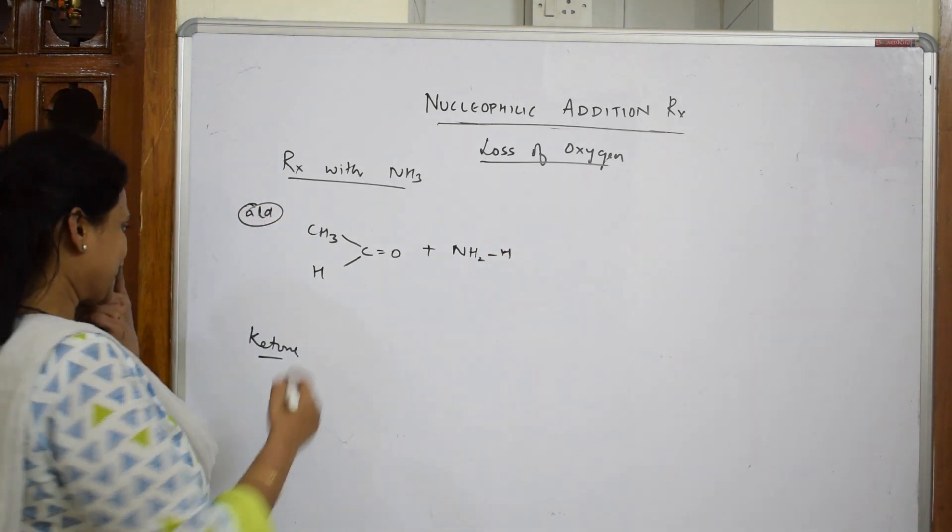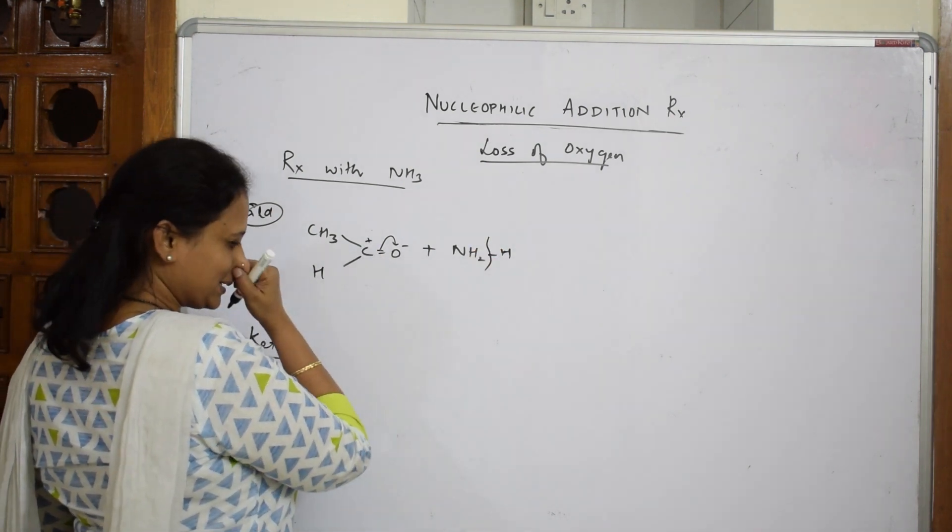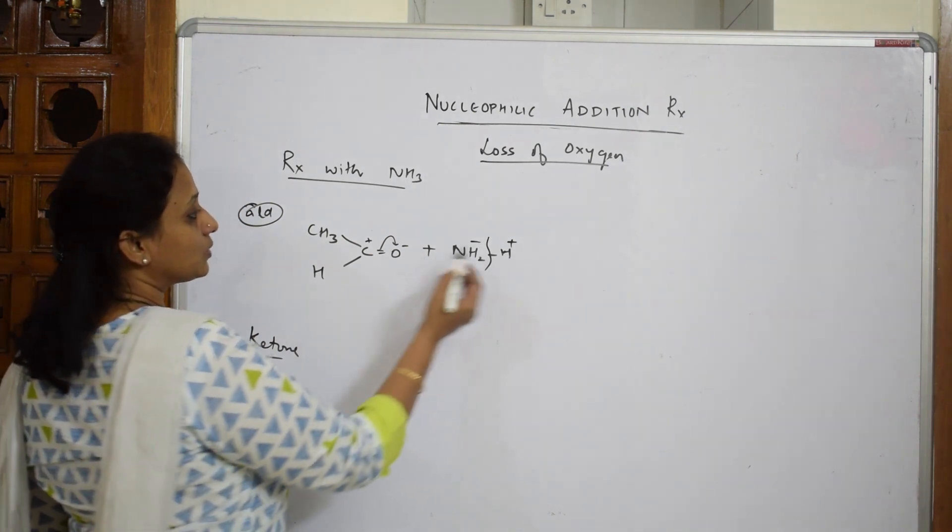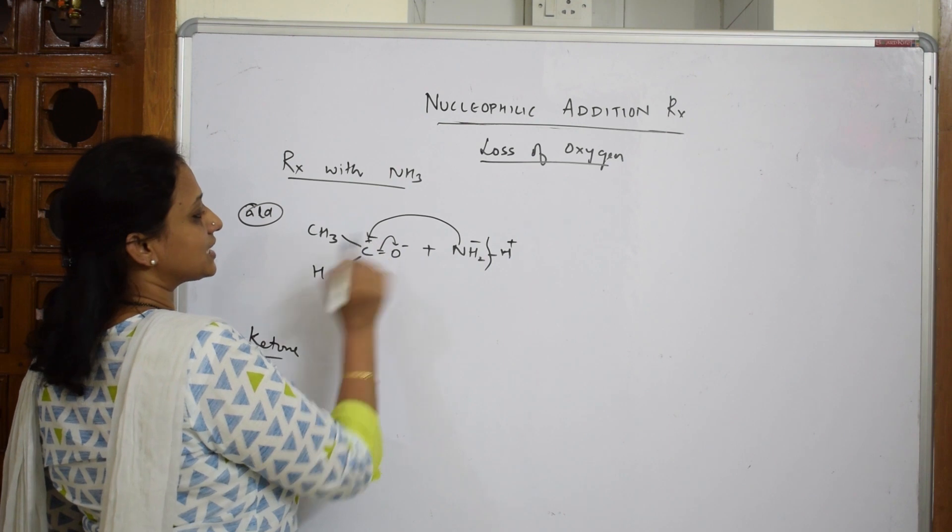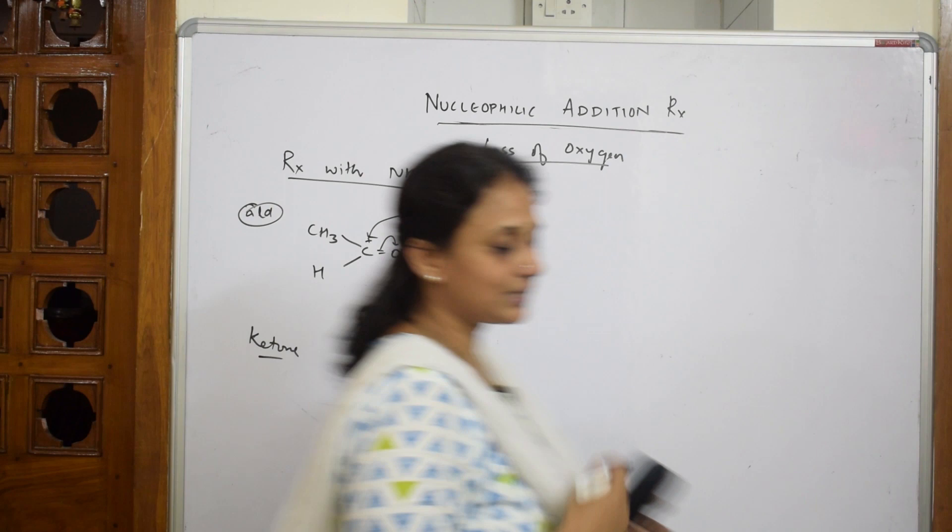As I said, there is a cleavage here - minus charge and plus. This also will break. This becomes H+ and ammonia. Observe carefully. Your minus goes and attacks the carbonyl carbon and your H+ comes and attacks this oxygen. What do I get?